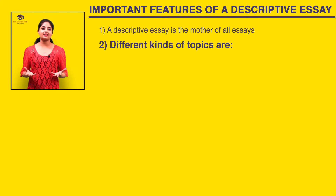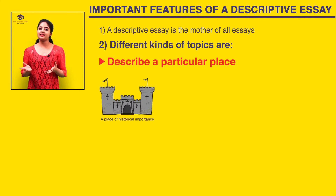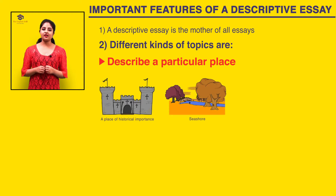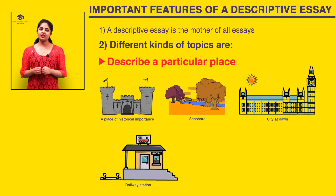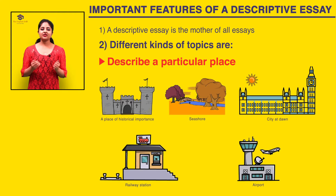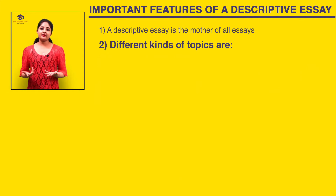Number two: different kinds of topics you might find under descriptive essay writing. Number one, you might be asked to describe a particular place — for example, a place of historical importance, a visit to a seashore, describe your city at dawn, describe a scene at the railway station, or describe an airport. These are all different places you might be asked to describe.